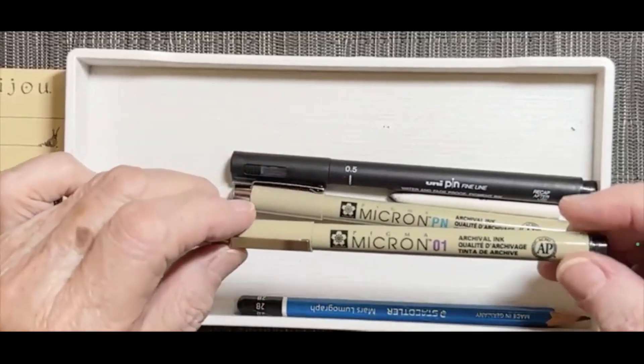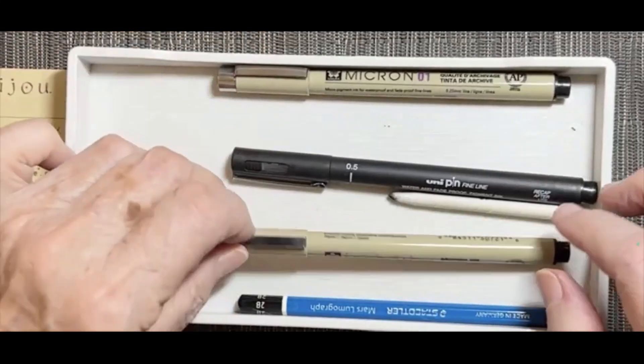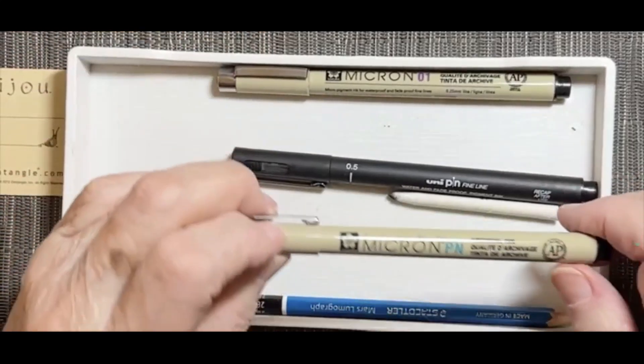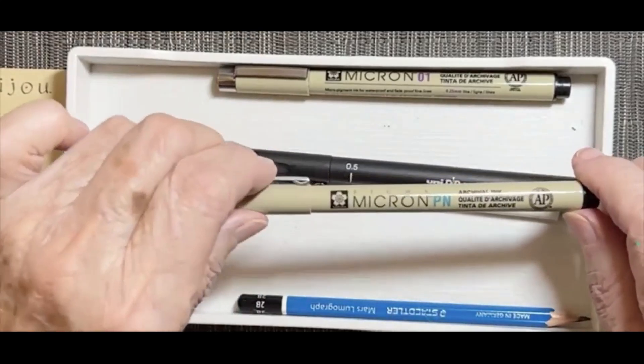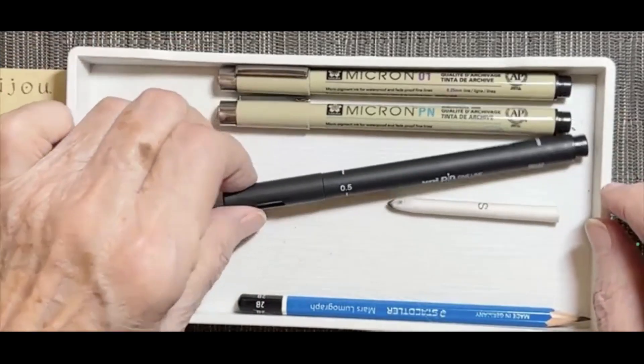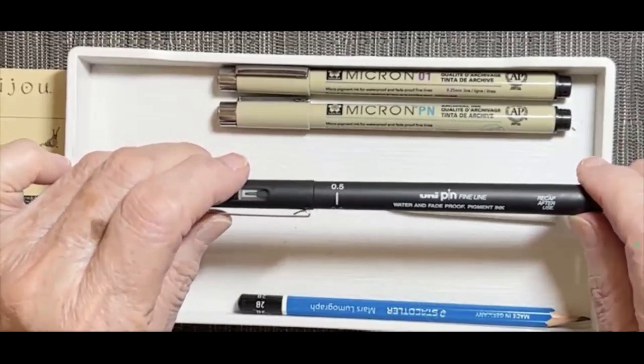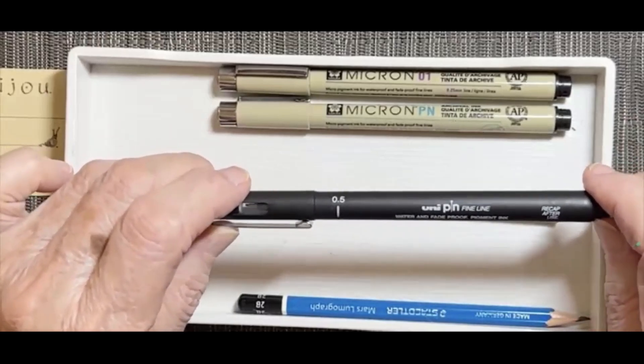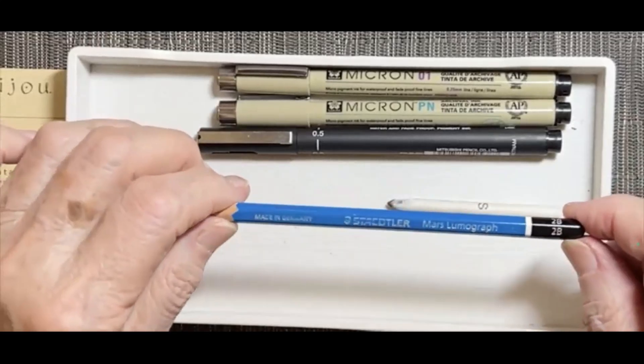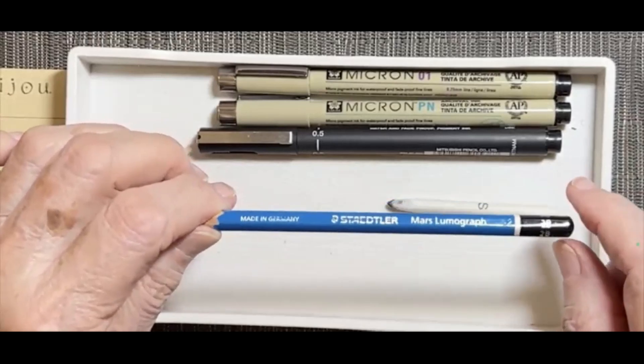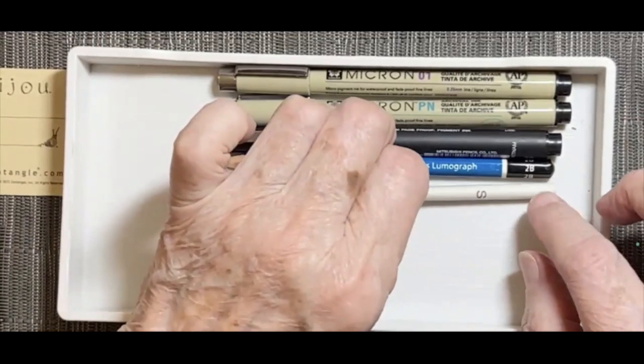So I am using a Micron 01. I also have the PN here, the plastic nib. And this will help with some of the inking that we'll do along the way. And I brought my UniPin, the 05, in case I want to have some thicker inking lines. I have a 2B Mars Lumograph Statler pencil, graphite that I really like, and a small tortillon.